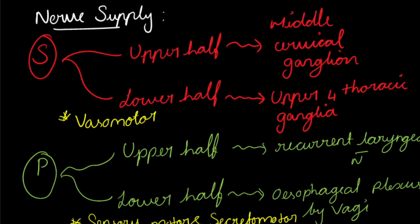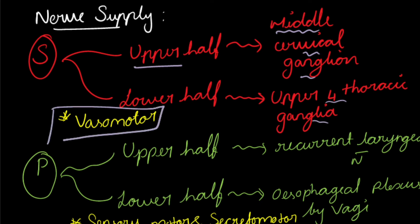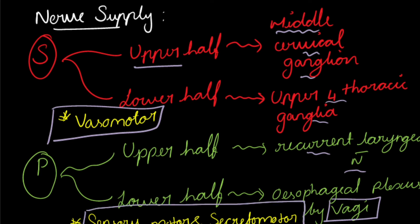Regarding nerve supply, the esophagus is divided into upper and lower halves. For sympathetic activity, the upper half is supplied by the middle cervical ganglion and lower half by the upper four thoracic ganglia — action is vasomotor. For parasympathetic activity, the upper half is supplied by the recurrent laryngeal nerve and lower half by the esophageal plexus formed by the vagus nerve — action is sensory, motor, and secretomotor. Thank you so much. If you have any doubts, comment below, and happy learning.